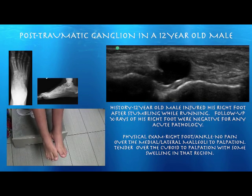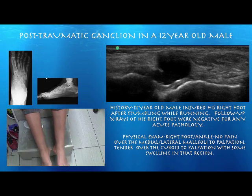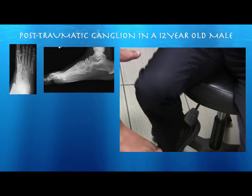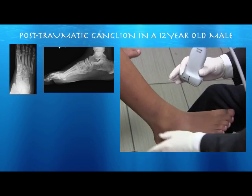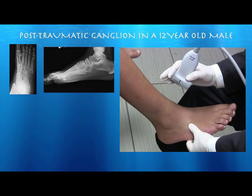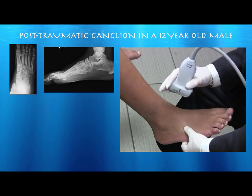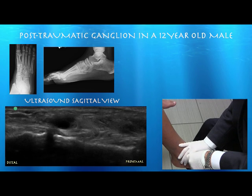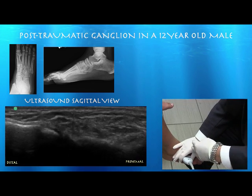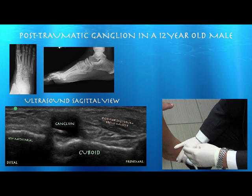This 12-year-old boy twisted his foot about one month ago and has pain right over the cuboid with a little bump there. X-ray didn't show much and it feels like it may be a ganglion. We go ahead and put the probe right over the bump — kind of reassuring as he was concerned maybe a bone was sticking out. Here in the ultrasound the cuboid is on the right side of the screen and the fourth metatarsal is on the left. You can easily see a ganglion right over the cuboid between that and the fourth metatarsal.